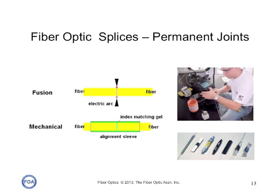We have two ways we can join fibers. We can join them permanently by making a splice. Most splices are made by fusing the fibers with an electric arc, essentially welding them together. But we also use mechanical splices that align the fibers and crimp them to hold them in place. We use splices outdoors for long cable runs to connect cables, or sometimes to connect indoor cables to outdoor cables when we have to run a cable into a building.